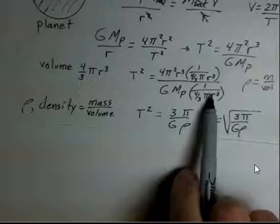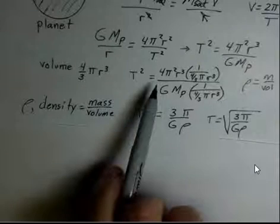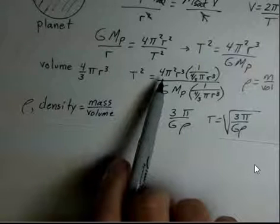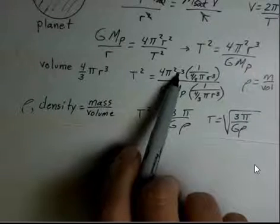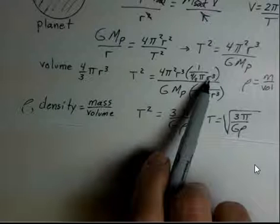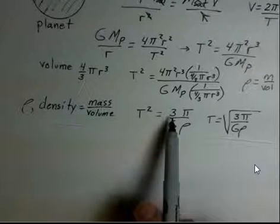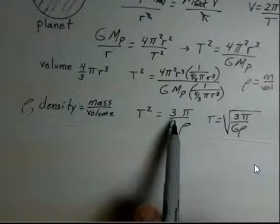There are several cancellations in the numerator. The 4's cancel, one factor of π cancels, the R³ cancel. I've got multiplying by R³ and dividing by R³, so they cancel. So I'd have 1/3 in the denominator. We invert and multiply and get a factor of 3 on top. So 3π over Gρ. We simplified quite a bit.